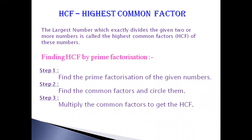Children, in this video I am going to use two methods for finding HCF. First one: finding HCF by prime factorization. Prime factorization means the number expressed as a product of prime numbers. Step one: find the prime factorization of the given numbers. Step two: find the common factors and circle them. Step three: multiply the common factors to get the HCF.